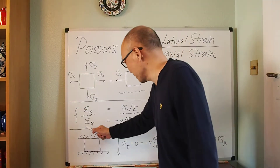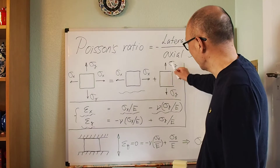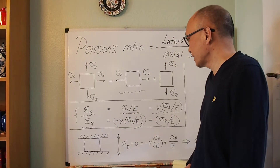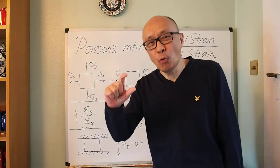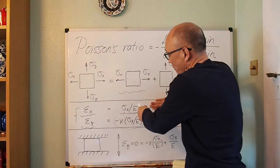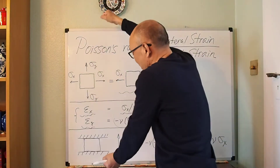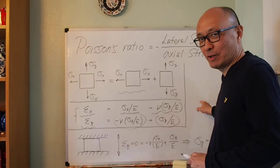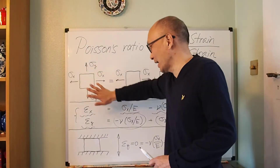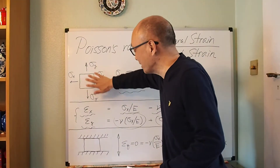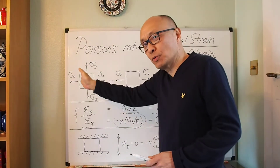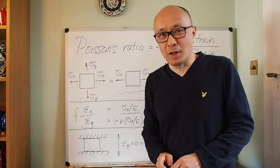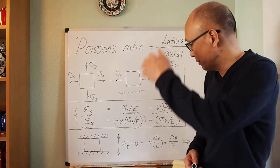You can do the same thing for the second direction: strain in the y direction equals σy/E minus ν·(σx/E). This is a small extension of Hooke's law — Hooke's law is just strain equals stress divided by Young's modulus, but if you have stress in another direction you add a second term. If you also had stress in the z direction, you would add a third term. For simplicity, I'm looking at a plane stress condition, so I don't consider stress normal to the body. This extension is called the generalized Hooke's law.